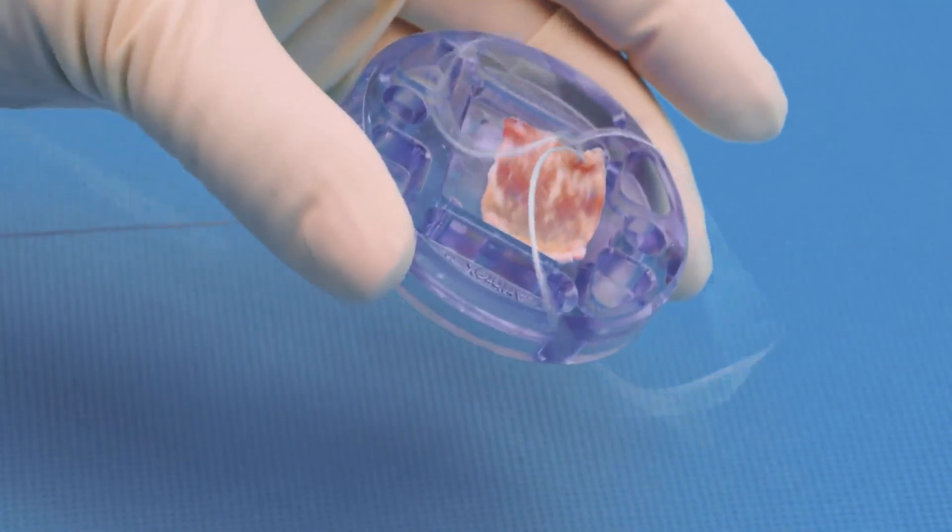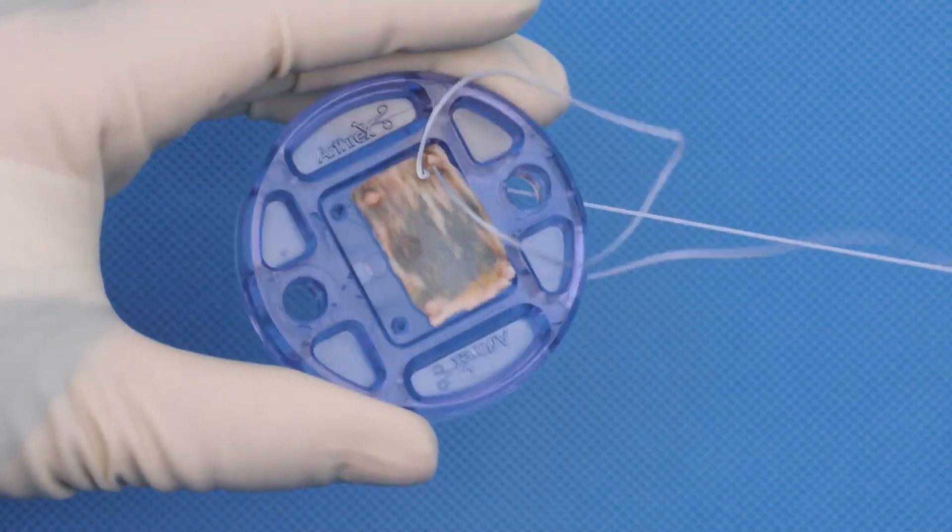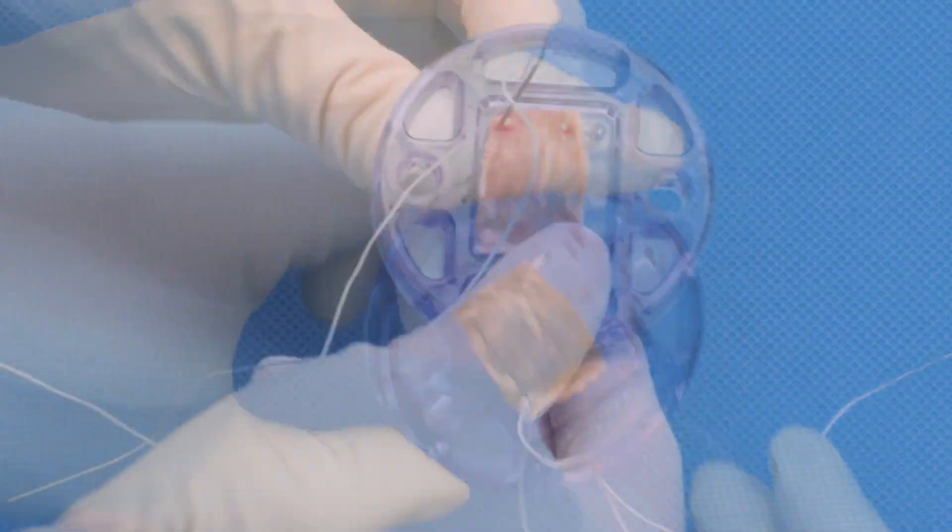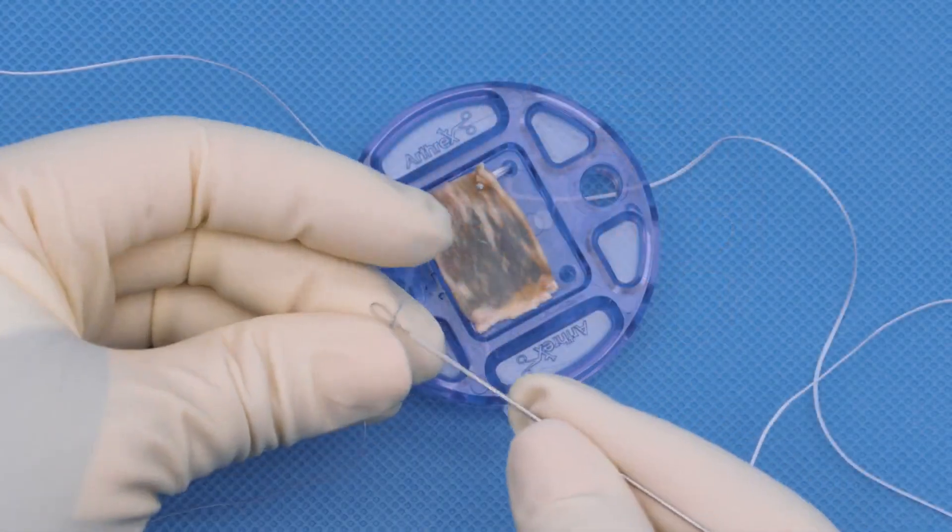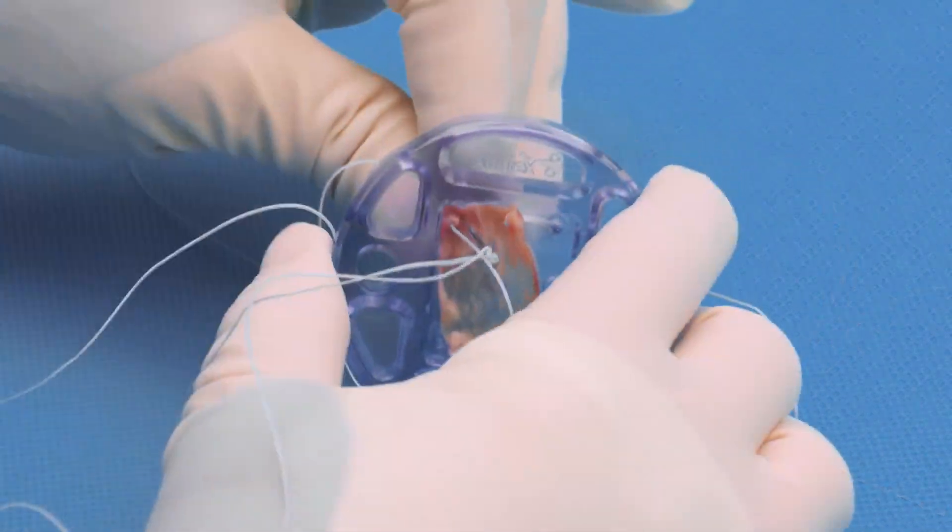Both passes of the mattress stitch will go through the same hole in the compression plate. Repeat on the opposite medial corner of the graft with the same keith needle, but now with the zero fiber wire suture.